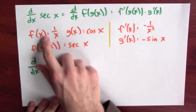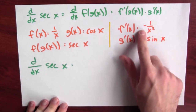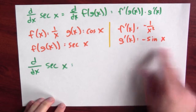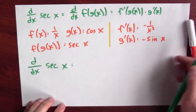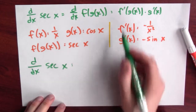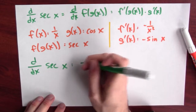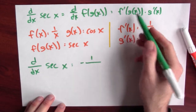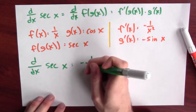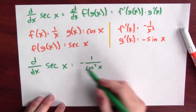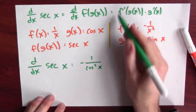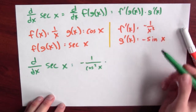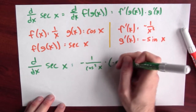We can separately calculate the derivative of 1/x, which is -1/x², and the derivative of cosine, which is -sine. Putting this together, the derivative of secant is the derivative of f evaluated at g(x) — that's -1 over cosine squared — times the derivative of g, which is -sine.